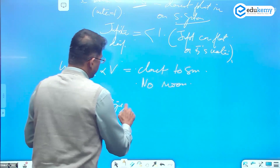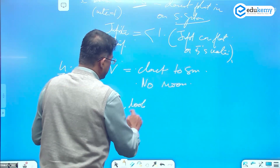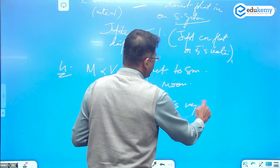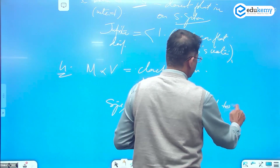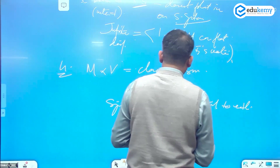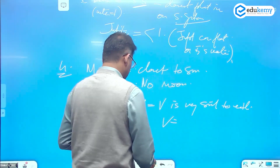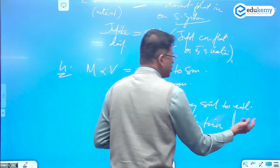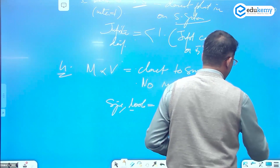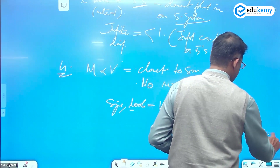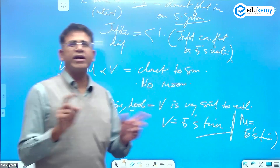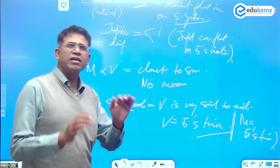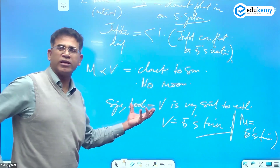In terms of size and appearance, Venus is very similar to Earth. That's why Venus is often called Earth's twin. Some books also mention Mars as Earth's twin, and we'll look at the reasons for each.